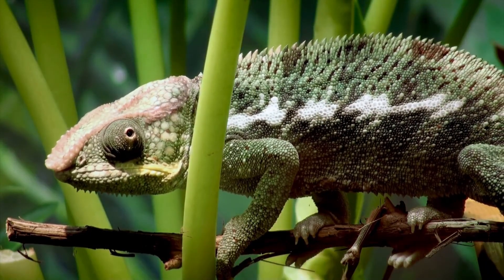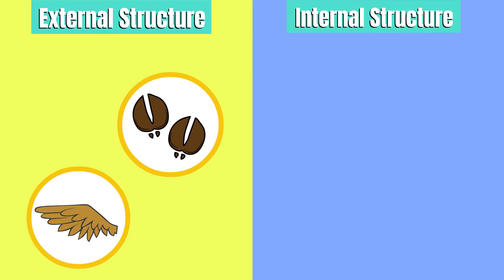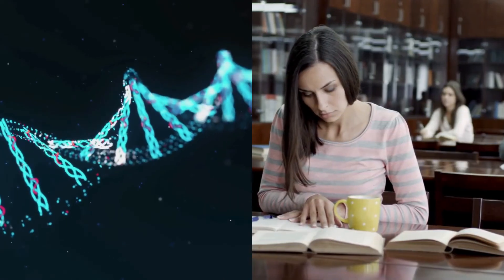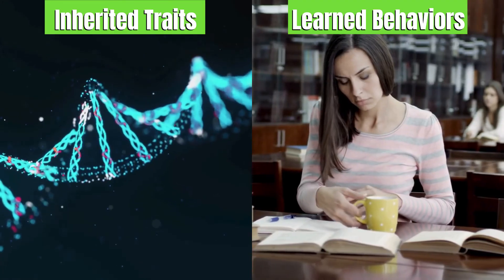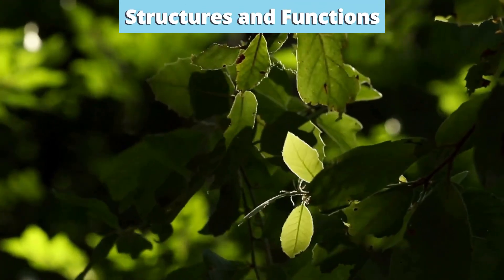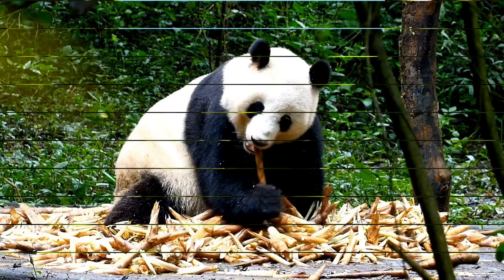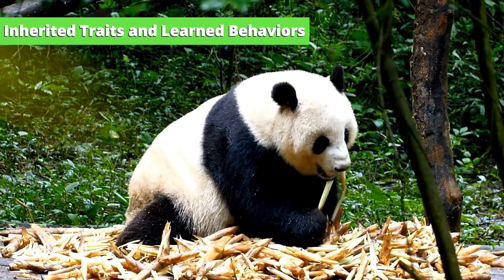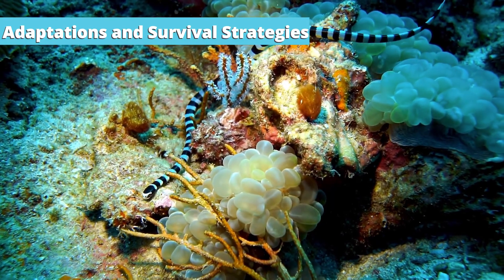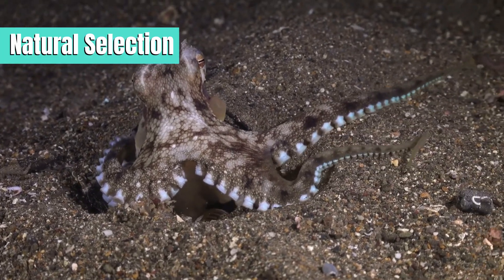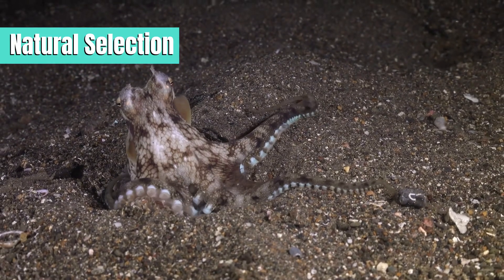Conclusion: Today we explored how the structures and functions of different species help them survive in the same environment. From external features like hooves and feathers to internal systems like lungs and hearts, every structure plays a role in an organism's ability to thrive. We also learned about the difference between inherited traits and learned behaviors, and how natural selection shapes the evolution of species. Let's recap: structures and functions — physical features of plants and animals help them survive in their environments. Inherited traits and learned behaviors — some characteristics are passed down genetically while others are learned through experience. Adaptations and survival strategies — organisms adapt to their niches, allowing them to live together without excessive competition. Natural selection drives the evolution of species, helping them become better suited to their environments over time.